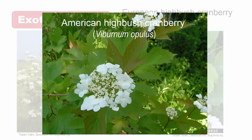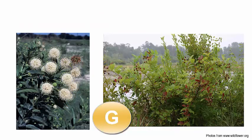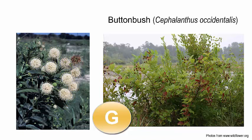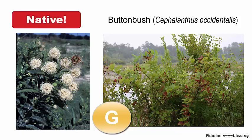The next plant is buttonbush, Cephalanthus occidentalis — a favorite of mine since I do a lot of work in wetlands. This plant grows right in a wetland but also in wet sites. I actually just planted a nativar of this in my own yard. It has a beautiful white flower and fruit later in the year, and it's a native plant — a good one for any wet site or even a rain garden.